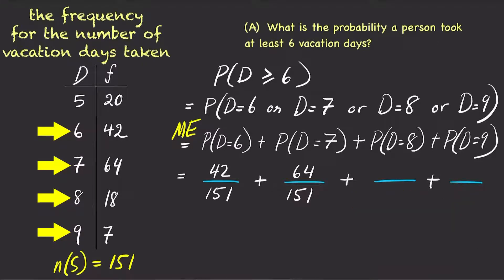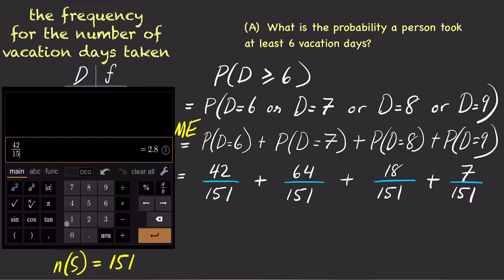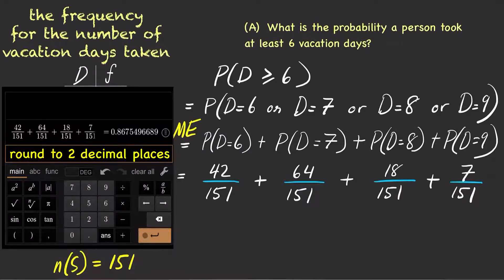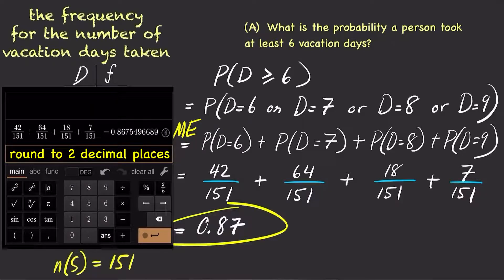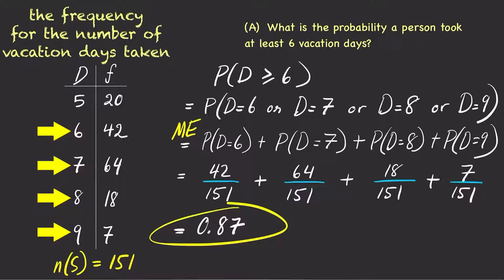Now, use your calculator to plug in these numbers. The answer is 0.87. In other words, the probability a person took at least 6 vacation days is 87%.